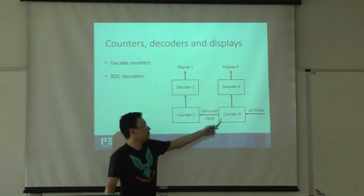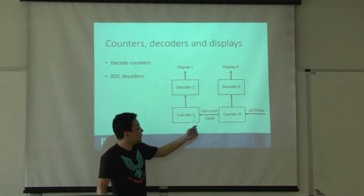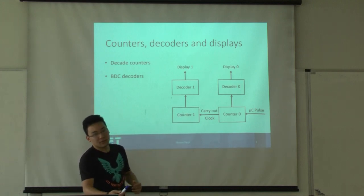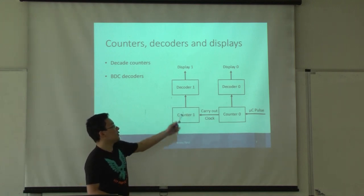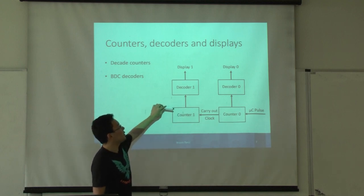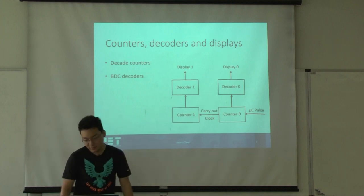When the counter reaches 10, they send a pulse to the carry-out pin, which will be the clock of the second counter, the tens counter. The decoders will just work to transform the BCD numbers, the binary code numbers, to seven-segment displays because it's easier to see.